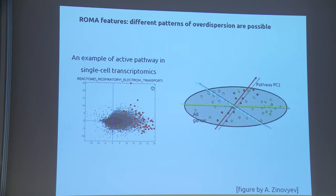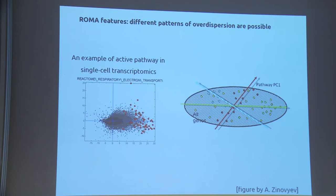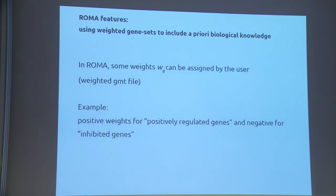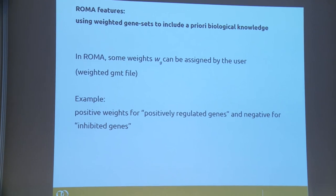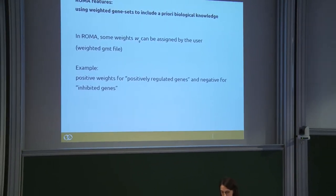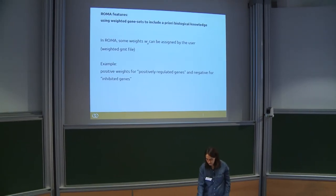We also account for different patterns of over-dispersion — genes can contribute positively or negatively to the variance of the set. In some cases, all genes contribute in the same direction, such as when a transcription factor acts only as an activator and all its targets are overexpressed. Our method is able to detect this type of pattern. We can also incorporate prior biological knowledge by fixing some weights in the measurements to reflect what we know about certain pathways.